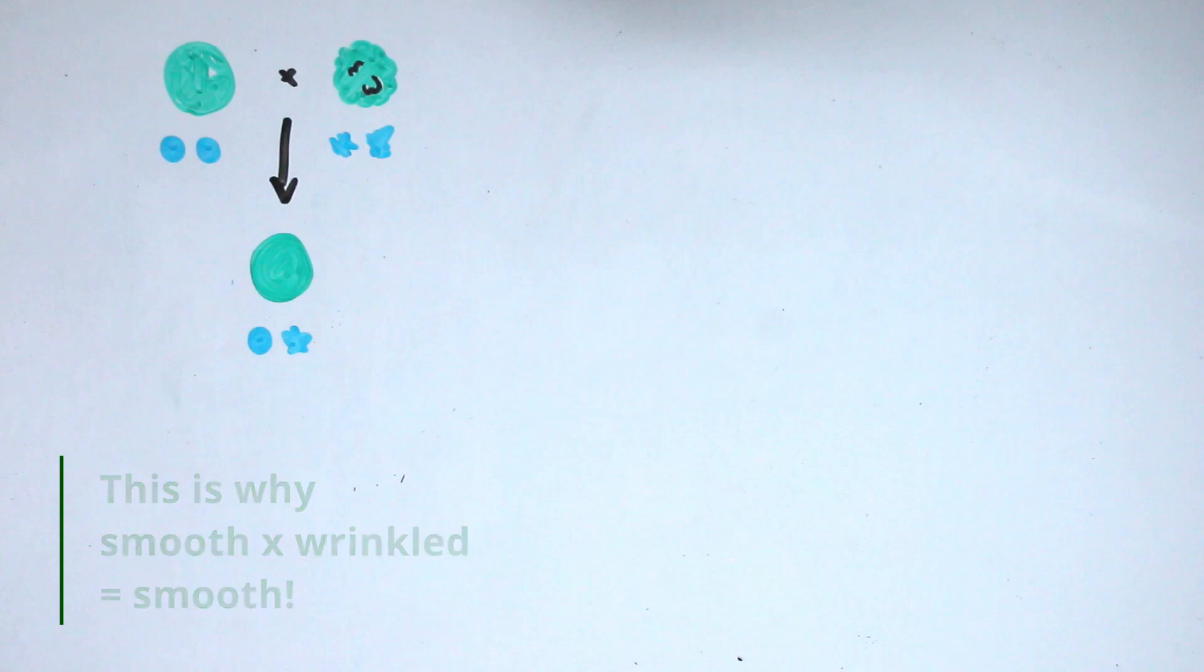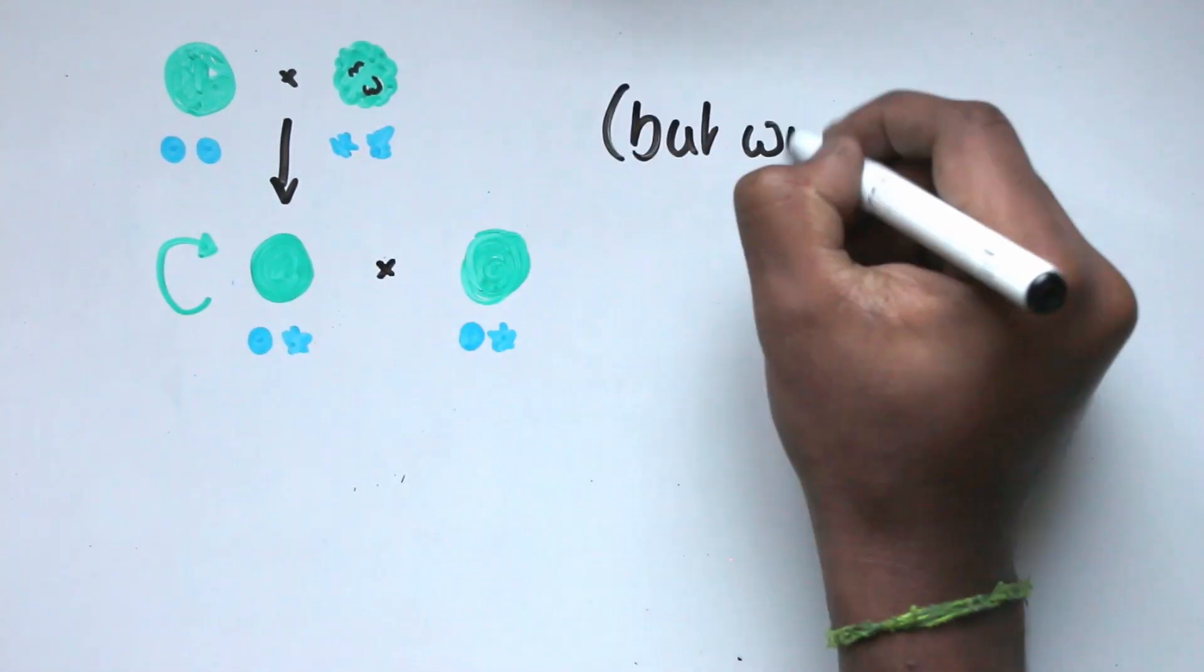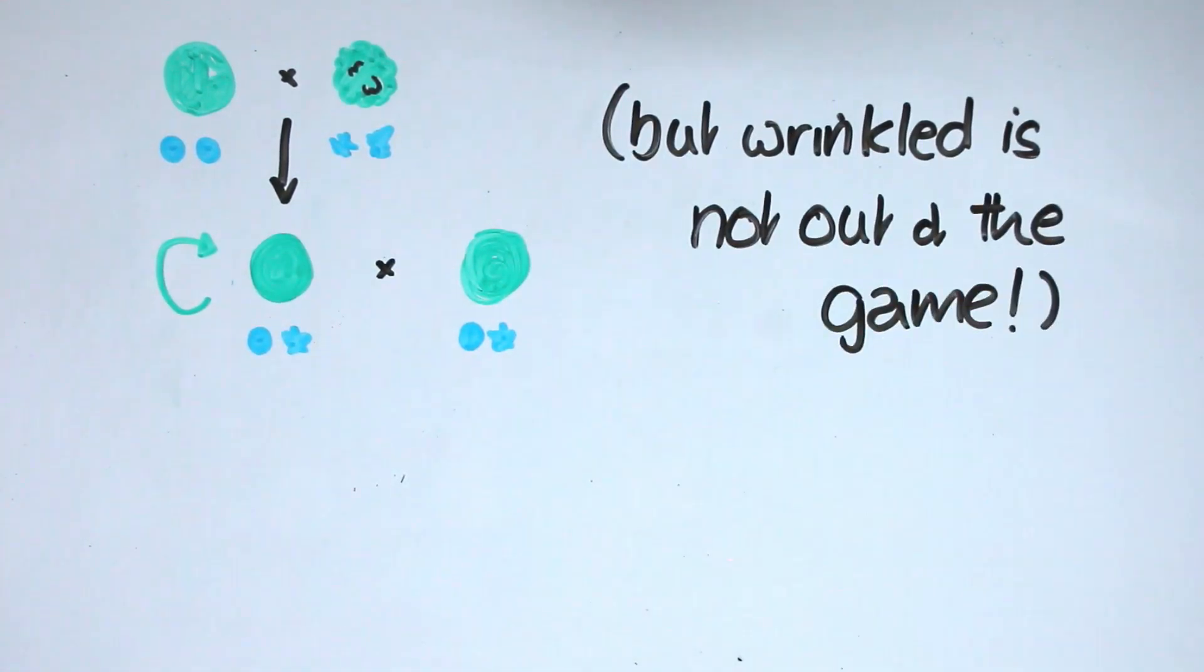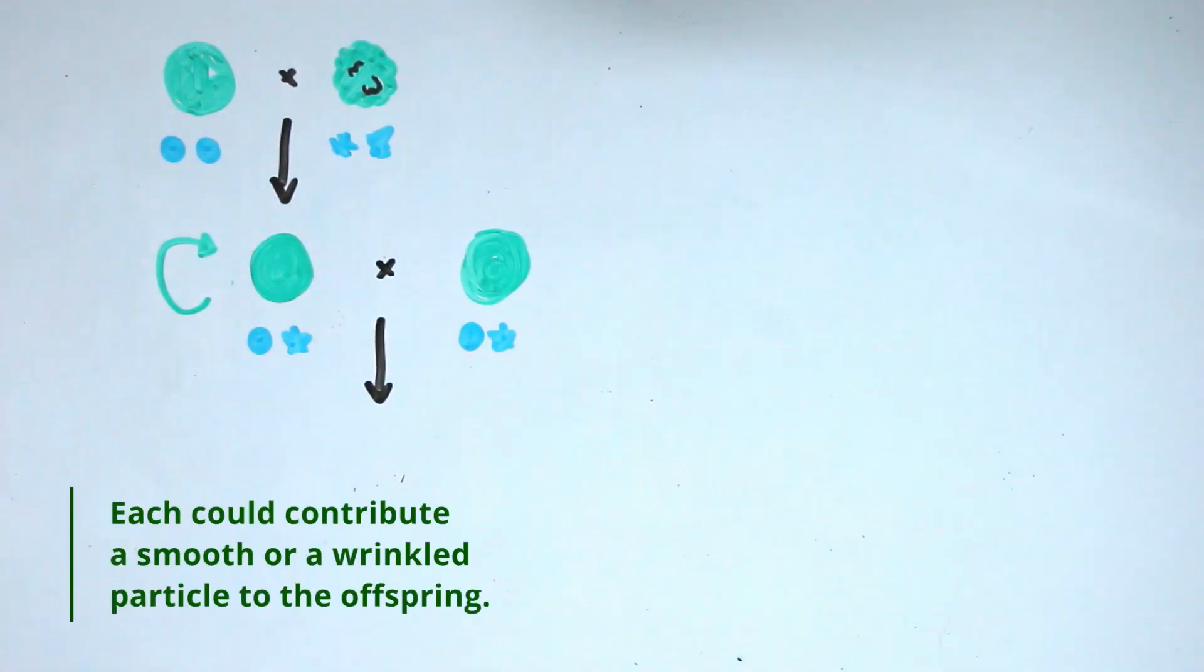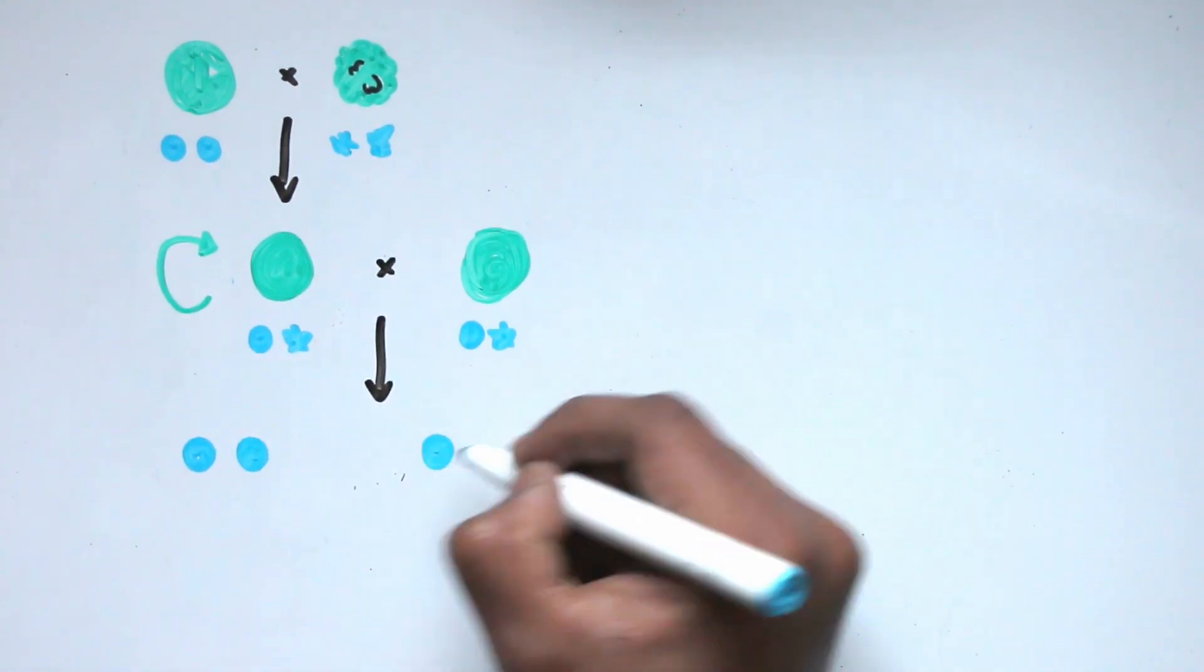When the recessive particle lost, it could still be inherited by that plant's offspring. Since this plant had two different particles, there was a half chance for either one to be inherited. So when it bred with itself, each parent would contribute one of two particles to the offspring, resulting in four possible combinations.